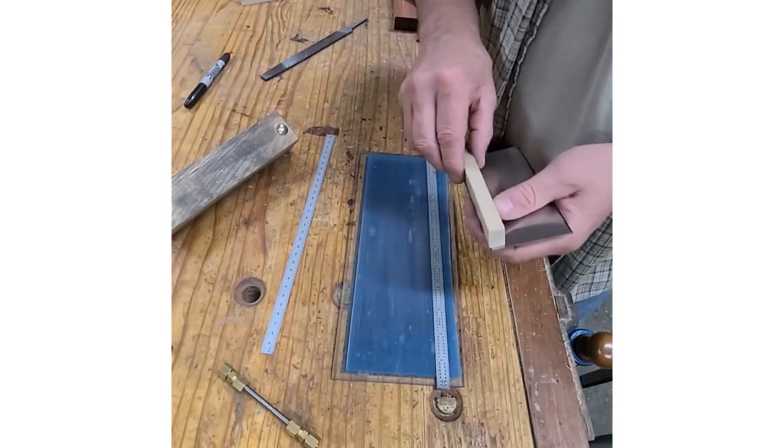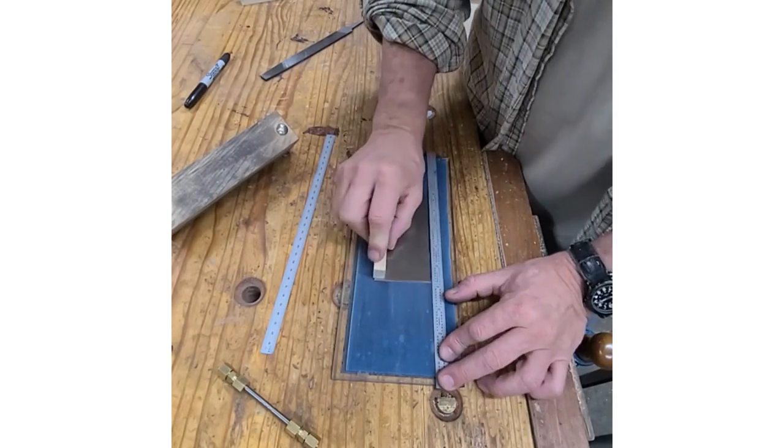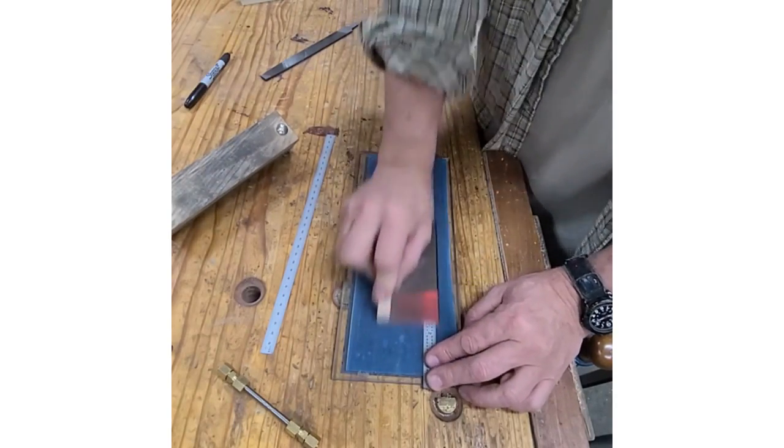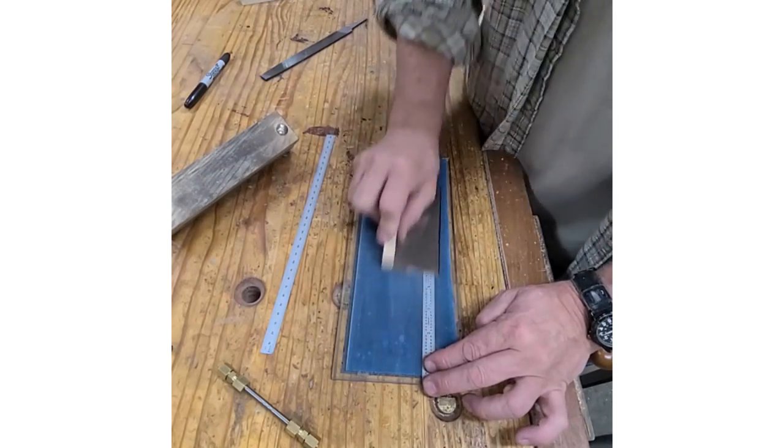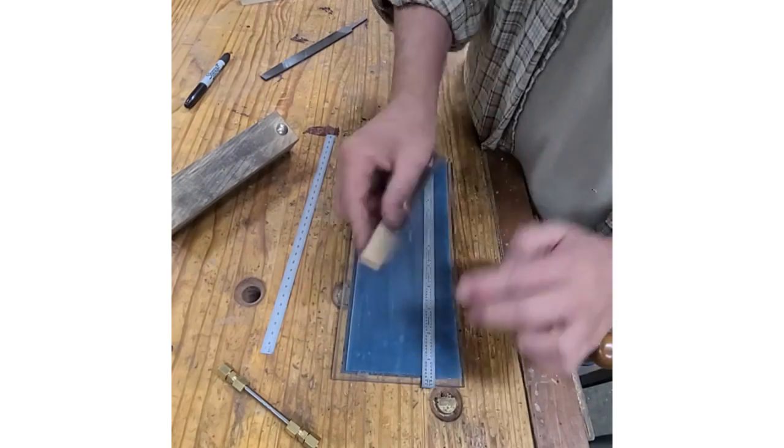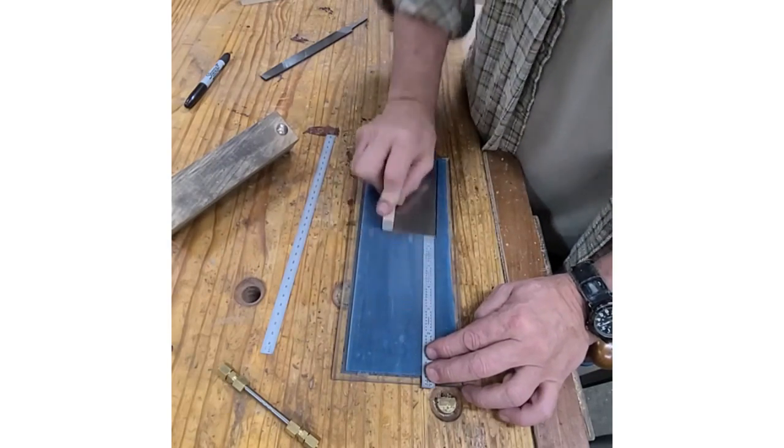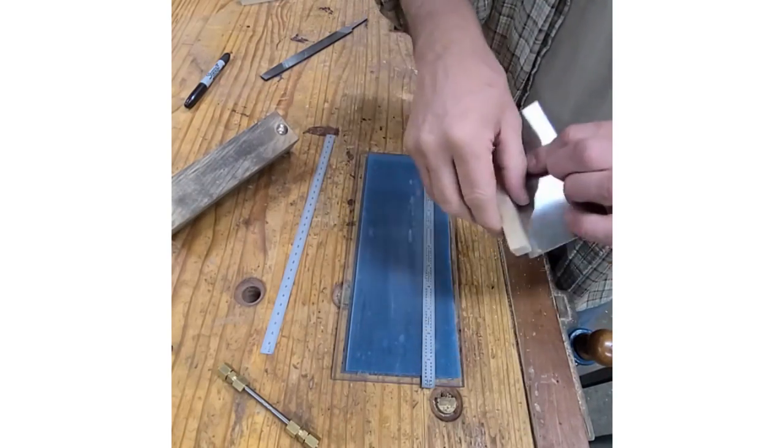Take my magnetic handle and I just do light pressure and I'm just going to hone this here. What the ruler does is it lifts it up just slightly so all the pressure is right on the very tip of the scraper, which is what I want. I don't want to hone the whole face. I go just until I can see that marker is removed right from the edge. There we go on that side.